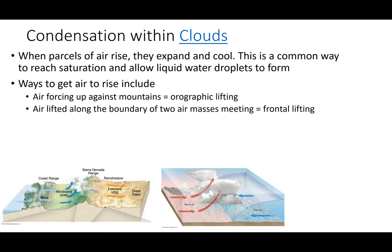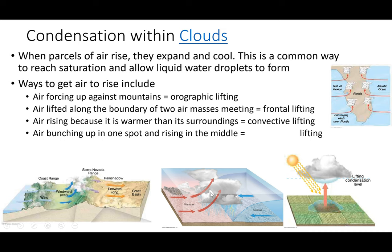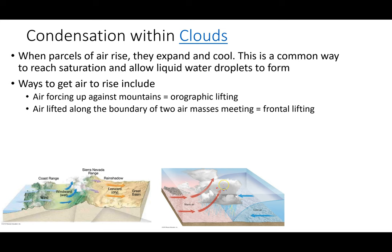Another lifting mechanism: where air masses meet we call that boundary a front. Cold air is stubborn and stays low, while warm air is a bit more energetic and goes up and over the cold air. That's called frontal lifting. So at a front, warm air is forced upward, it expands, cools, and can produce condensation and precipitation.